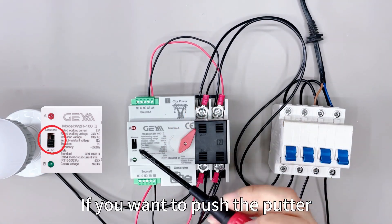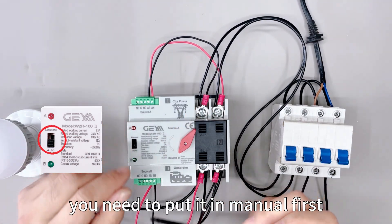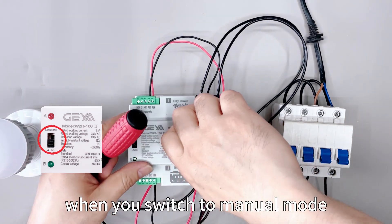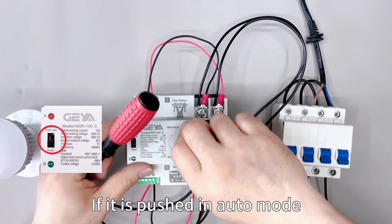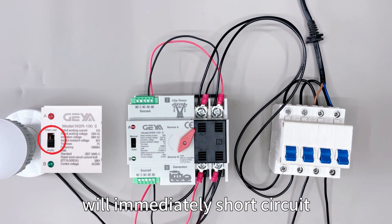If you want to push the putter, you need to put it in manual first. You can only push it like this when you switch to manual mode. If it is pushed in auto mode, it will immediately short circuit.